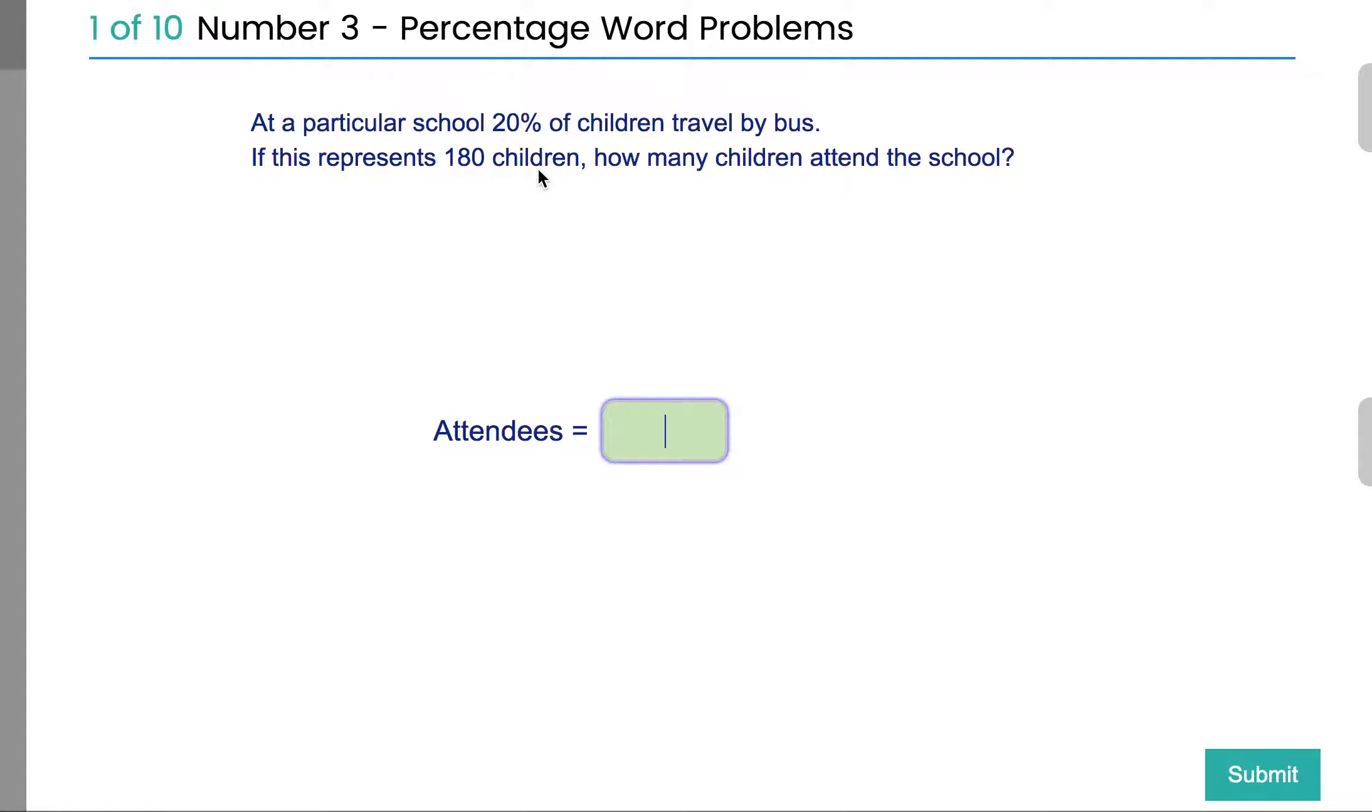And I've told you to use the tip of trying to work out what 10% would be. Because once you know 10%, you can just times it by 10 to get 100%. So, if 20% is 180, then half of that is going to be 10%, isn't it? 20% is 180, so 10% would be half of 180, or 90 kids. So we've worked out what 10% was by just halving it, because we knew that 20% was 180.